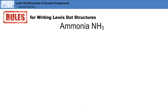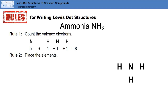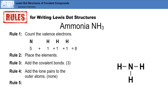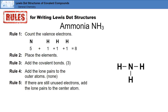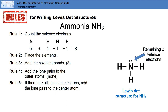Next, we'll apply the fifth rule. In this example, we're going to use NH3, commonly known as ammonia. We'll start by going through the first four rules. Now we can apply rule five, which states: if there are still unused electrons, add the lone pairs to the center atom. So we'll place the remaining two valence electrons on the central nitrogen atom. This creates the Lewis dot structure for ammonia.